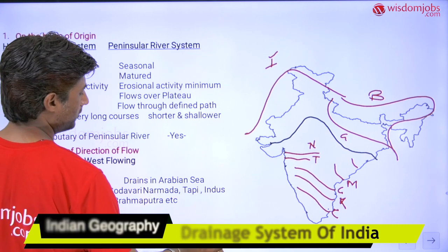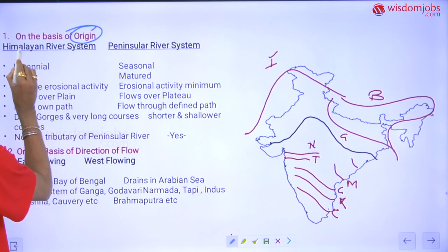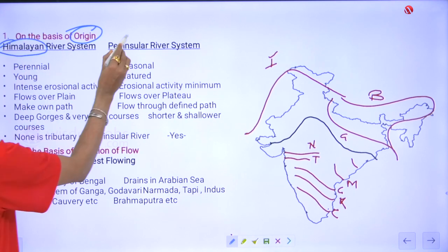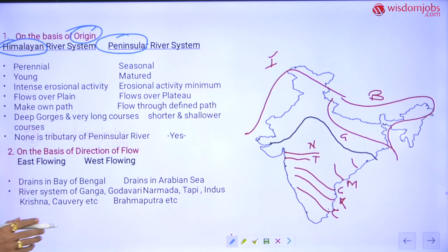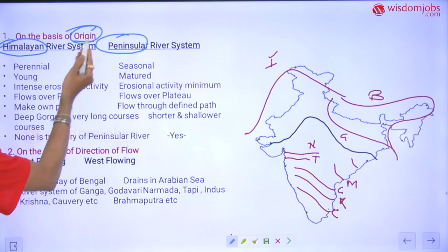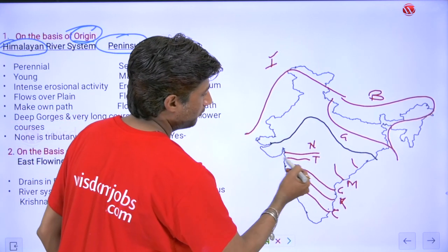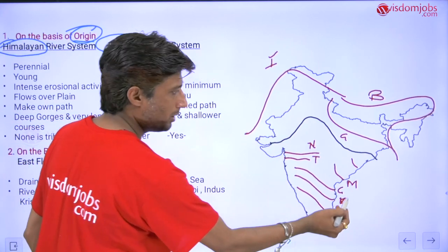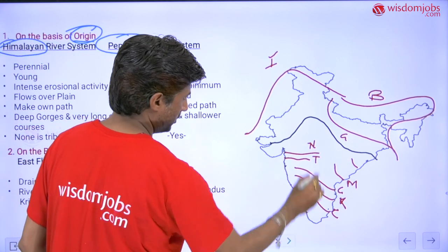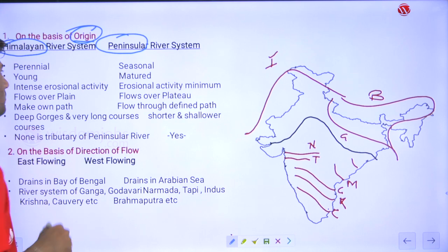On the basis of origin, rivers have been divided into the Himalayan river system and the peninsular river system. The name itself indicates the origin — some rivers originate from the Himalayas, while others flow over the peninsular region.